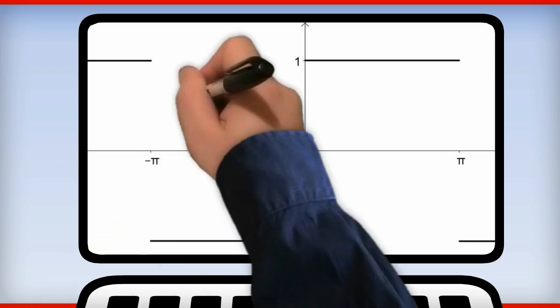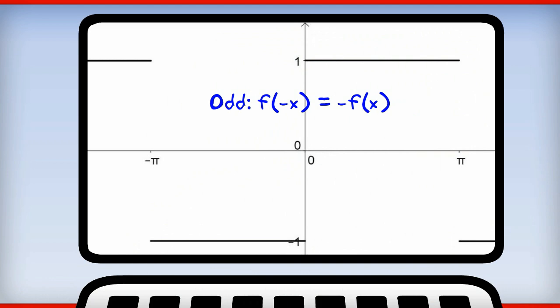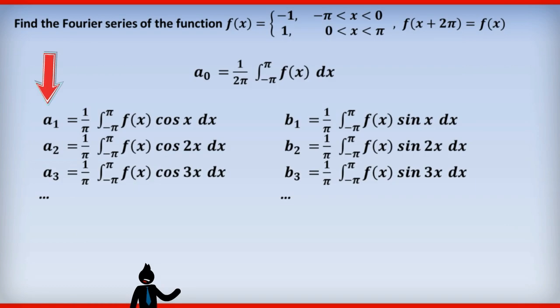The next thing is the function f is an odd function. That is f of negative x equals negative f of x. And where you have an odd function you expect that all the expressions with cos will also equal zero. In other words all the a terms will equal zero. So we're going to expect all the a terms to equal zero.